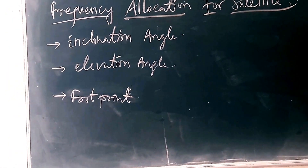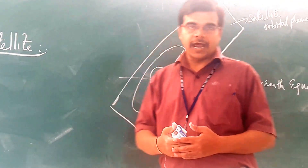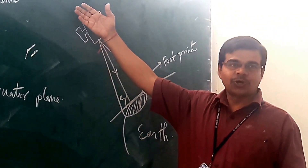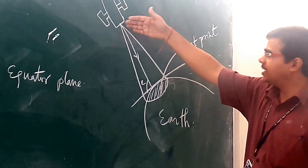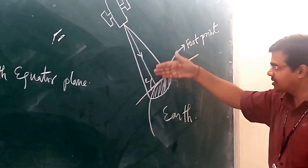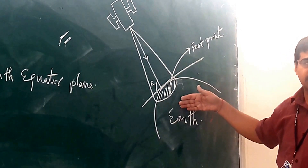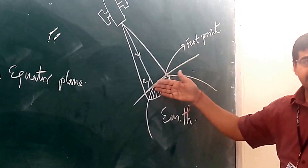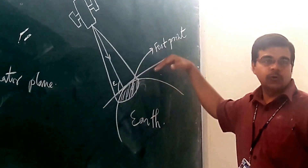The second parameter is elevation angle. This is the arc and this is the satellite. From the satellite, a continuous signal will be falling on the earth surface. We will consider the central signal — the central signal that is making an angle with respect to the tangent to the earth.